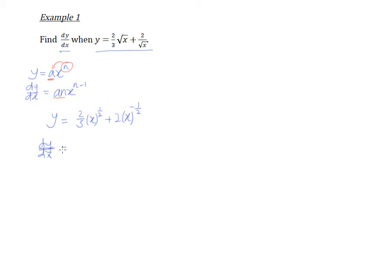So it's not that difficult anymore, because we're going to bring down the half, and we're going to have a half, and multiply by the 2/3. And of course, the original power, which is half, we're going to minus 1, and that gives us a negative half.